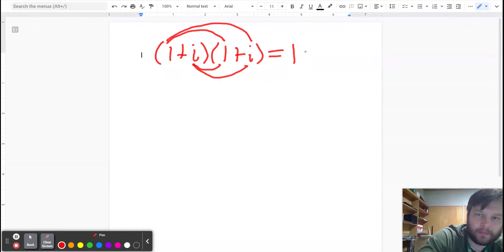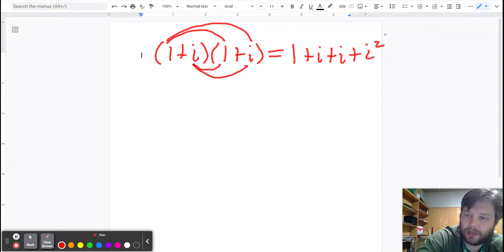One times one. One times i. i times one. i times i. What's i times i? i squared. Oh, but i squared. We know what i squared is. i squared is just equal to negative one.